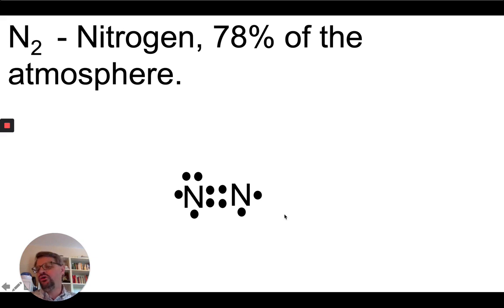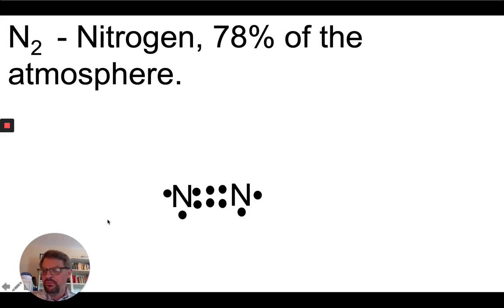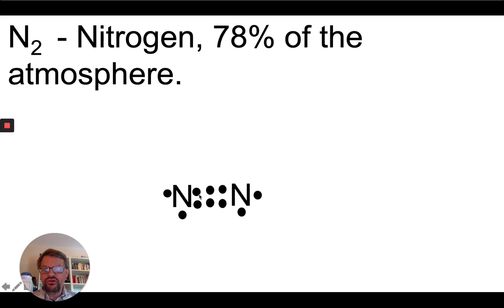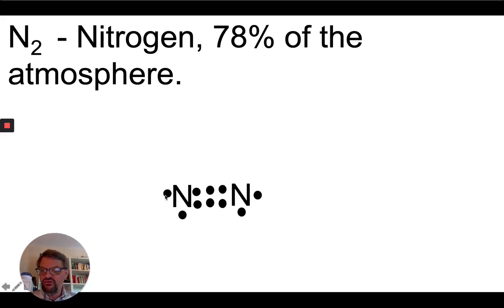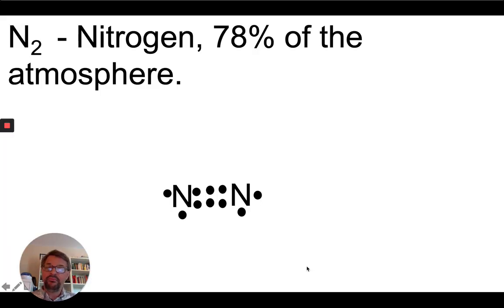We're closer, but we still want octets. One nitrogen is good with eight, but the one on the right is not. So we take two additional electrons and put them between the atoms as part of the bond. Much like carbon monoxide, this is also a triple bond — six electrons, three pairs of electrons. Each nitrogen now has two, four, six, eight — an octet. On the right, two, four, six, eight electrons — perfectly balanced.